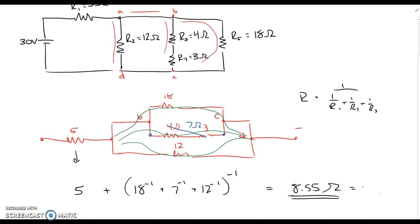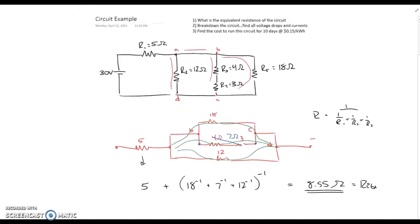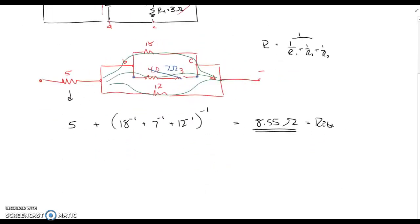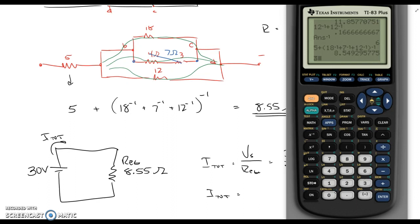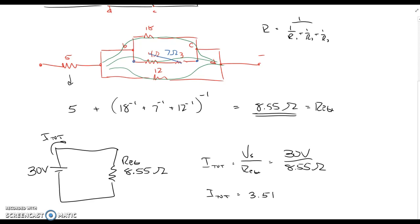8.55 ohms is my equivalent resistance. But what this means is that this circuit can effectively be redrawn like this: a 30 volt source with an 8.55 ohm equivalent resistance, which means we can actually calculate our total current. I total, using Ohm's law, is going to be the supply voltage over the equivalent resistance, which is 30 volts over 8.55 ohms, which is 3.51 amps.